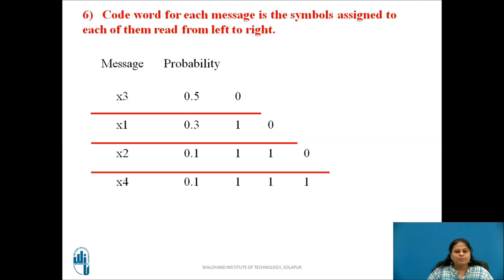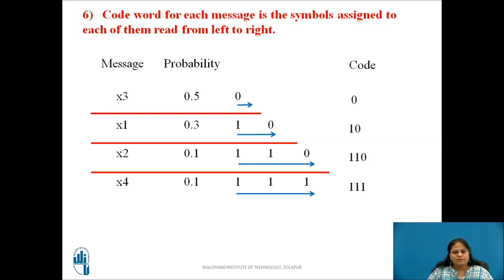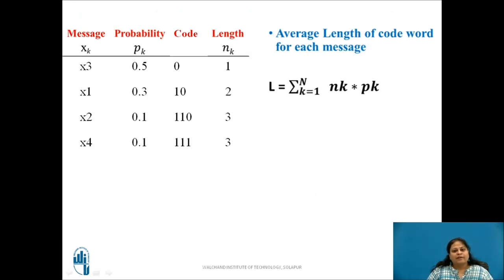The codeword for each message is obtained by reading the symbols assigned from left to right. Codeword for message x3 is 0, for x1 is 10, for x2 is 110, and for x4 is 111. This gives the length of each codeword to be 1, 2, 3 and 3 respectively. This table gives the summary of codewords and code lengths obtained for each message using Shannon-Fano coding method.